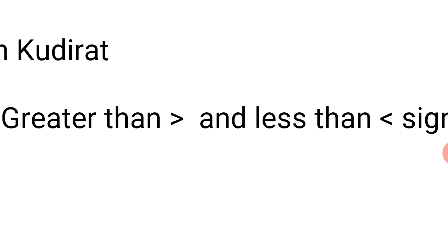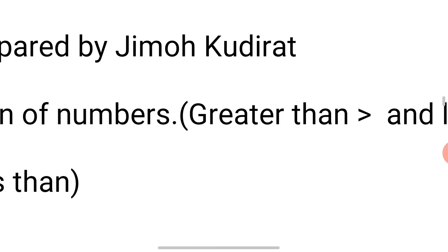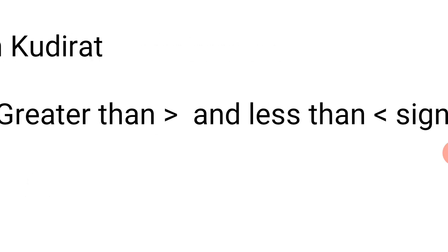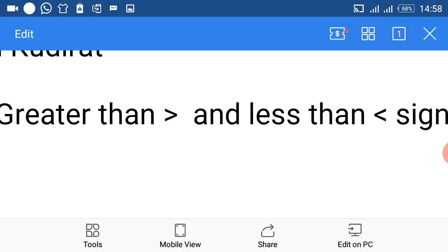We have signs. We use signs to indicate whether the first figure is greater than the second one or the first figure is less than the second one. Now, let's see how these two signs are written. The first sign is greater than, while the second sign is less than. We can use our right arm to demonstrate how greater than is written. But if you are confused and don't know the direction the sign will face, just bend your right arm.